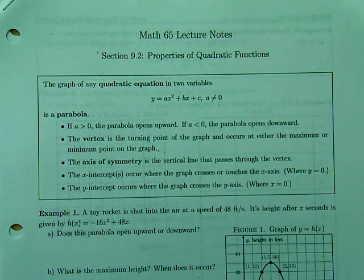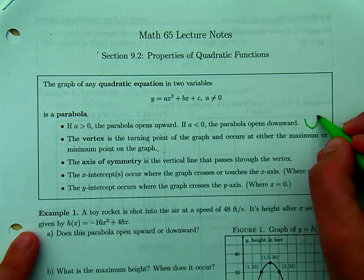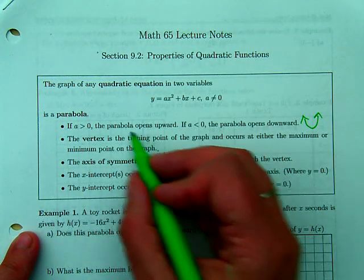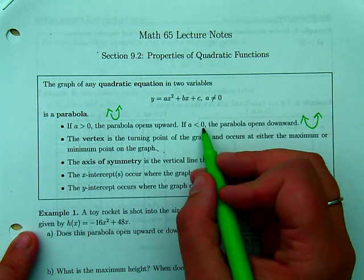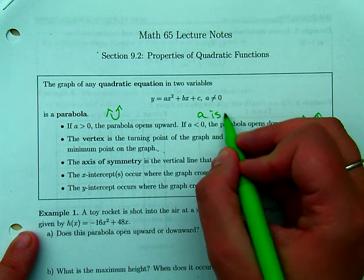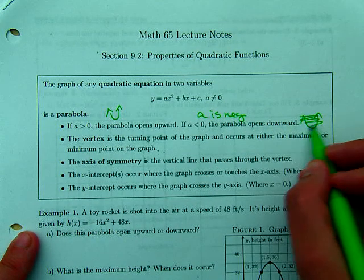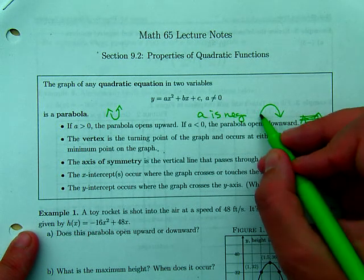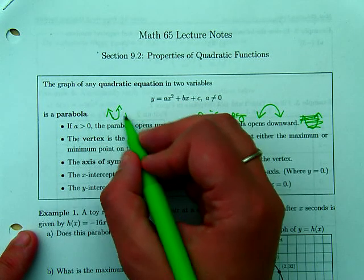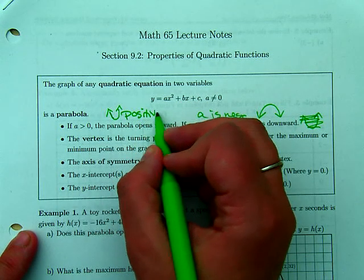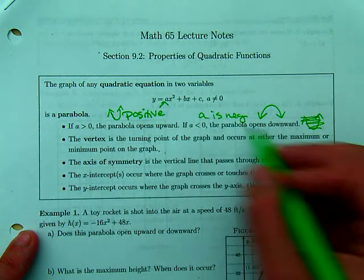It will basically smile at you. When a is less than zero, meaning a is negative, it won't smile, it will frown. So we have a positive coefficient of a, and we have a negative.